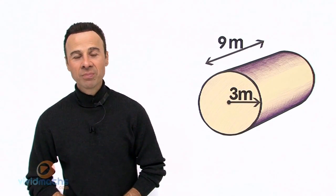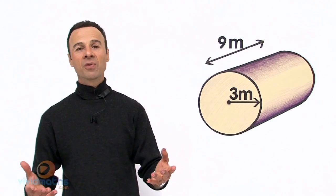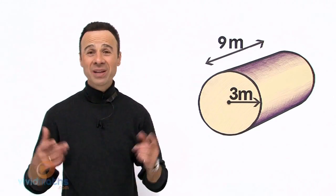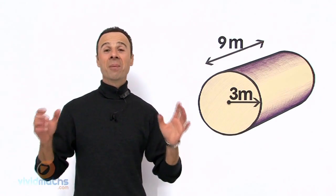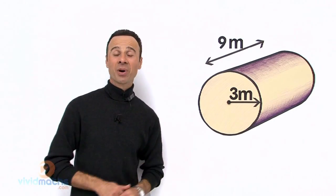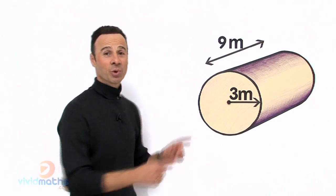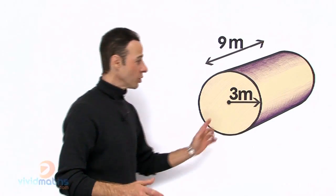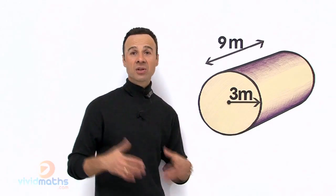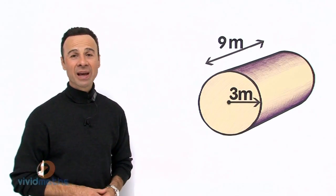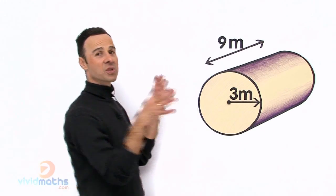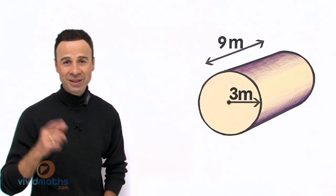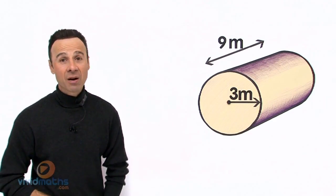Let's work this out. What is the first thing we do in order to work out volumes? We need to write down the formula, but first — what is a volume? Volume is the amount of space occupied by a solid. We are looking at how many meters cubed there are, because the units are in meters. Meters cubed is three-dimensional. We are looking at the volume of space inside this particular shape here, called the cylinder.